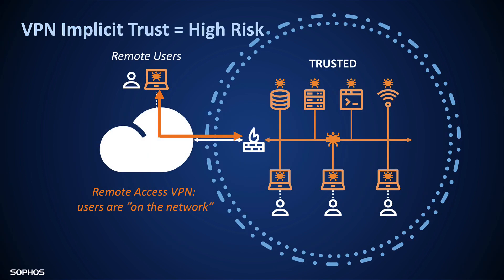How is Zero Trust used to improve remote access to network resources? With old-school remote access VPN, you connect to the network, and once you're on the network, you have all that implicit trust that comes with it, with potential access to other systems. Device health is not considered at all when using VPN — if you have a device that's been hacked or attacked, VPN will not prevent you from connecting. And the implicit trust that VPN provides means attackers on compromised devices have broad access to other parts of the network, making it an ideal target for a ransomware attack.